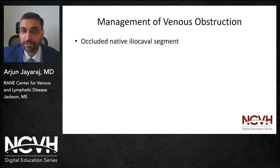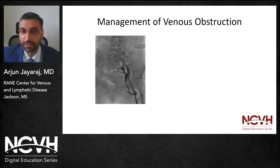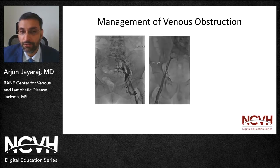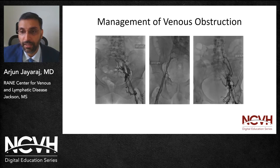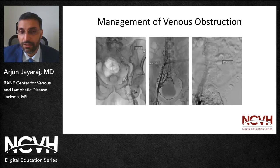With regards to an occluded native iliocaval segment, a few scenarios can be encountered: an ipsilateral unilateral or bilateral chronic total occlusion, a unilateral occlusion in the presence of a contralateral stent, or an occlusion in the setting of an occluded IVC filter. The initial step in all these situations is to obtain wire recanalization, which can be accomplished using an 0.035 glide wire supported by a glide catheter.